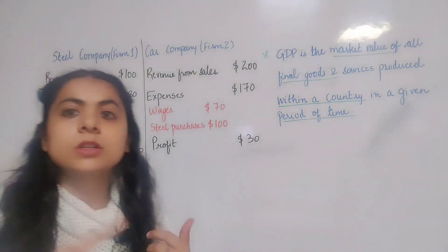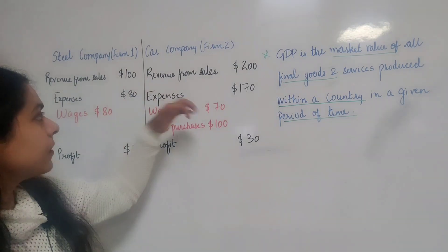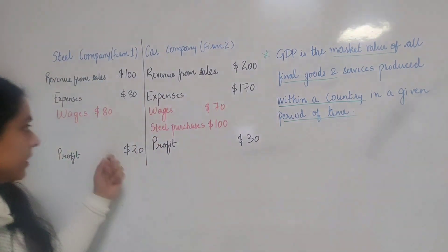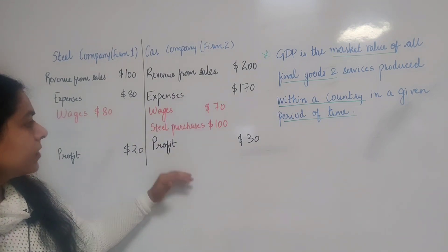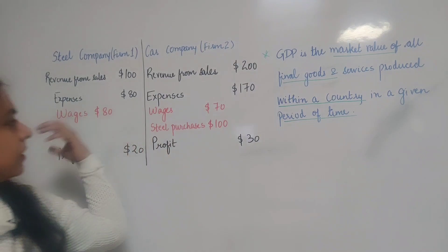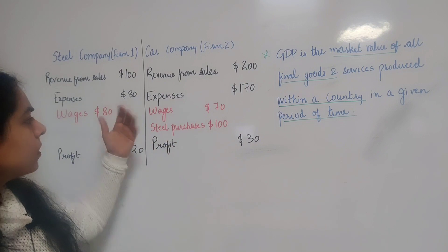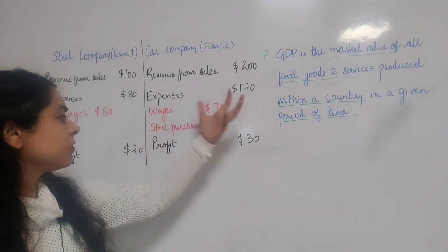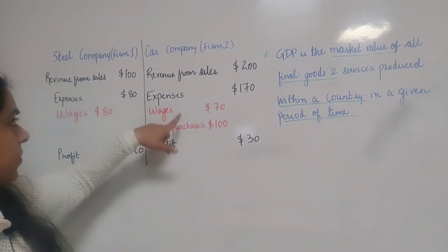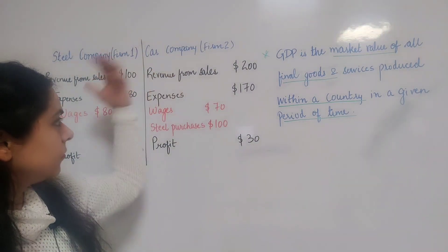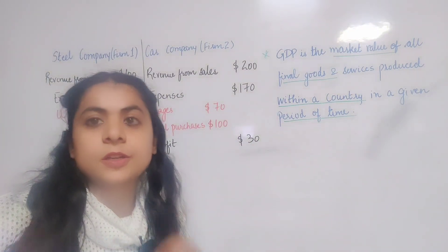Firm two uses steel produced by firm one as an input and, along with workers and machines, produces cars and earns a revenue of $200. The profits earned by firm two are $30, since it pays wages of $70 to workers and uses steel worth $100 as an input, making total expenses $170. So total profits earned by firm two is $30.